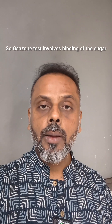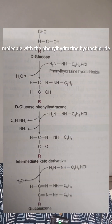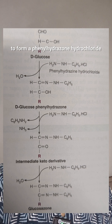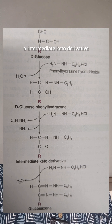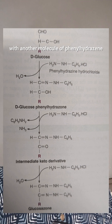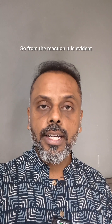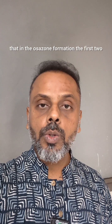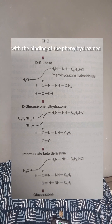The osazone test involves binding of the sugar molecule with phenylhydrazine hydrochloride to form a phenylhydrazone. This complex reacts with another molecule of phenylhydrazine hydrochloride to form an intermediate keto derivative, and this intermediate keto derivative reacts with another molecule of phenylhydrazine hydrochloride to form a corresponding osazone. From the reaction it is evident that in osazone formation, the first two carbons of the sugar molecule are involved in binding with the phenylhydrazine.